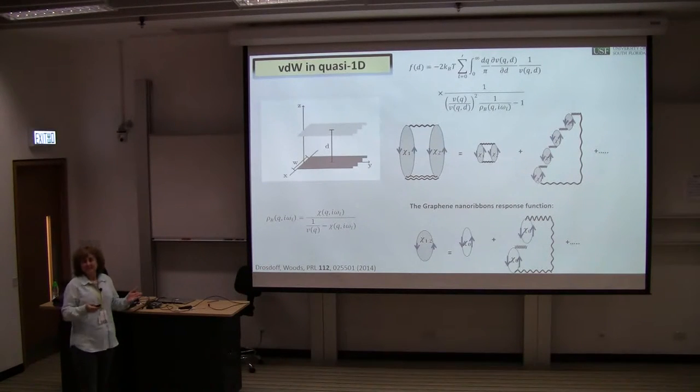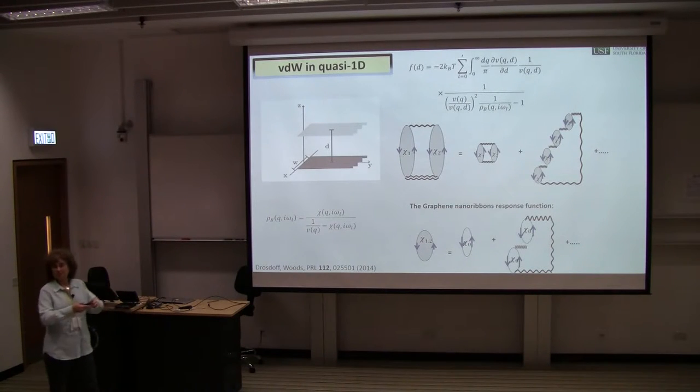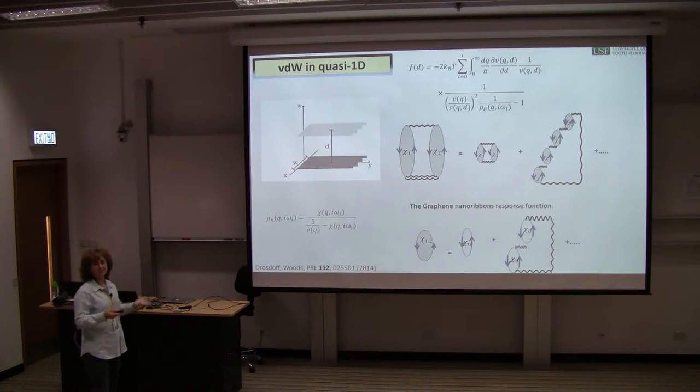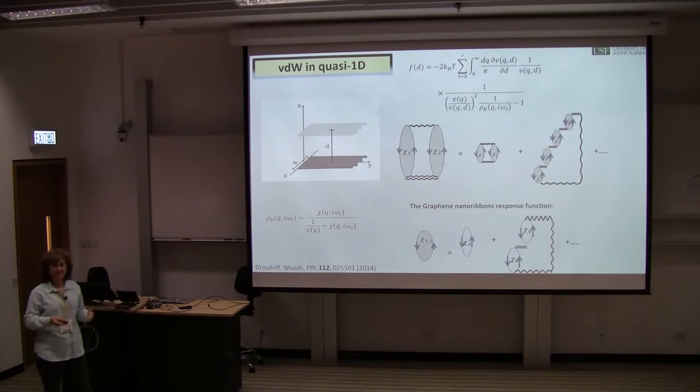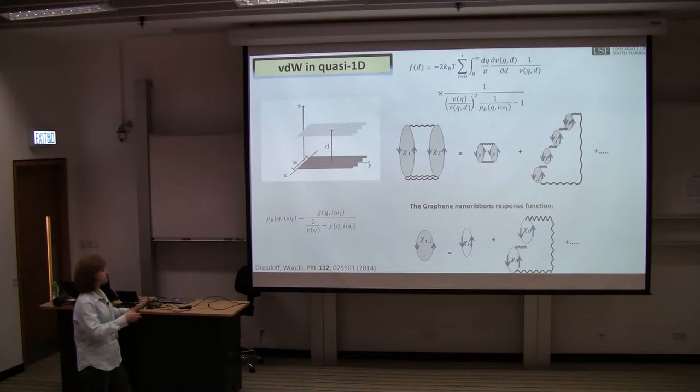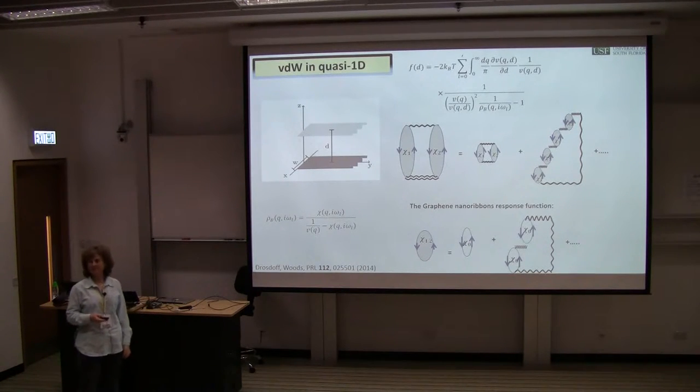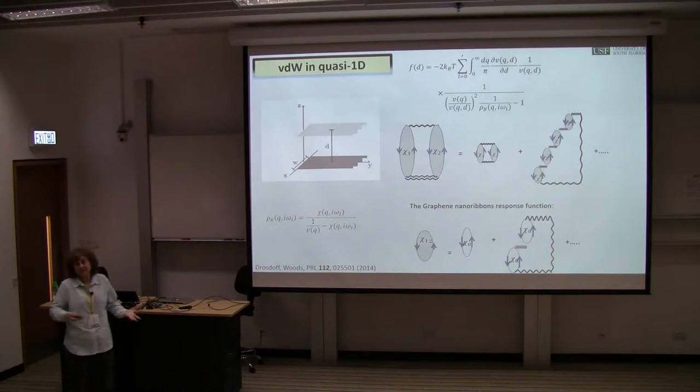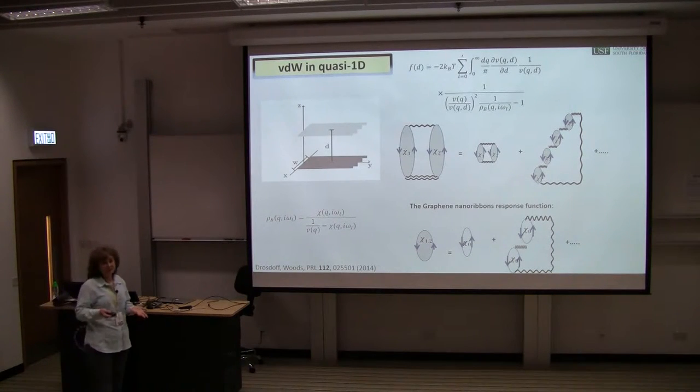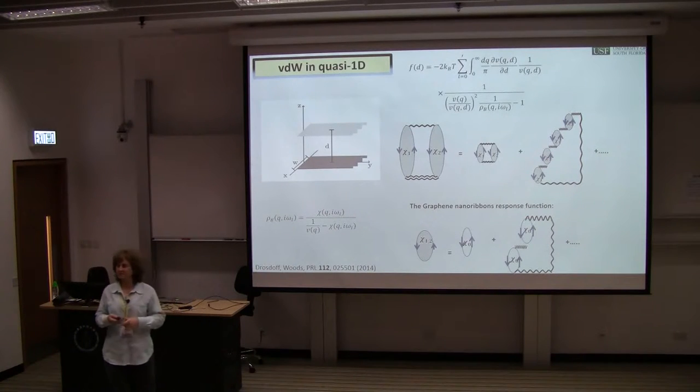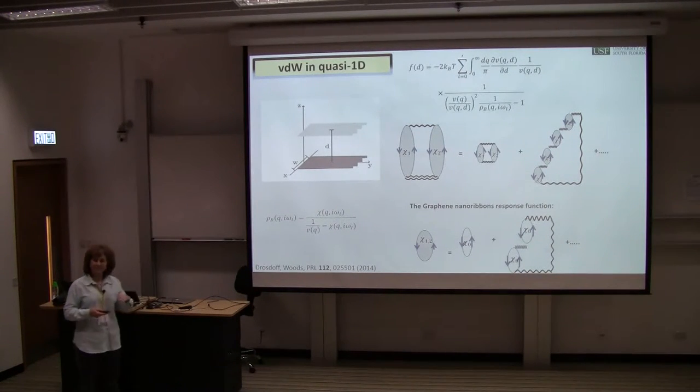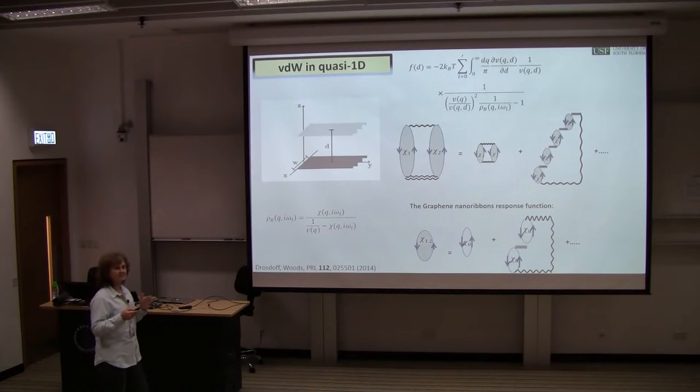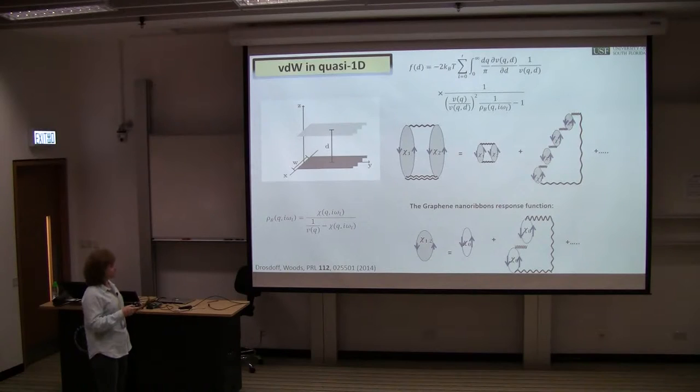Beyond graphene, the allotropes open up a new direction to explore Casimir and Van der Waals interaction. I asked myself, how can I calculate the interaction between quasi-1D systems such as graphene nanoribbons? If I want to solve Maxwell equation and obtain a Green's function for systems that have edges, that's not possible to do analytically. We go to the next layer and neglect retardation, looking at density-to-density correlation approach and treat the Coulomb interaction as a perturbation.